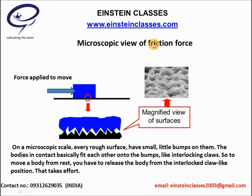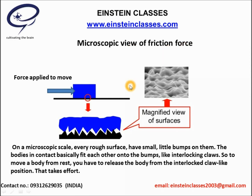Now we are going to discuss the microscopic view of frictional force. You can see a block placed on a surface. At the point of contact, every object has a rough surface — that means every rough surface has small little bumps, as seen in the magnified view. When this object is placed on the surface, the small little bumps of the two surfaces interlock. To move this object, we first have to break this interlocking, and to break it we have to apply some force — that is why the frictional force arises. This is the microscopic view of friction. In the next session we will discuss dry friction or solid friction in detail.